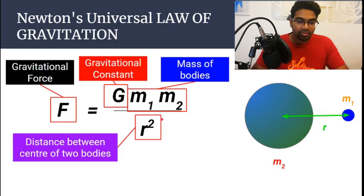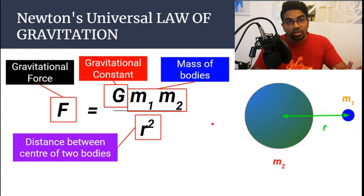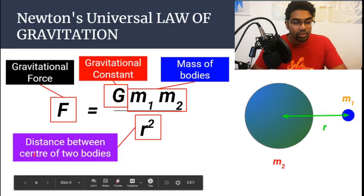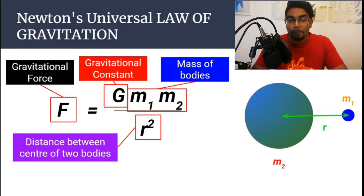And then we have r. r here, do not get confused with radius. r is not the radius. r is the distance between the center of the two bodies. That means from the center of one object to the center of the other object. This is r. So this formula is an expression of Newton's universal law of gravitation. But what does the law actually state? There are two things.